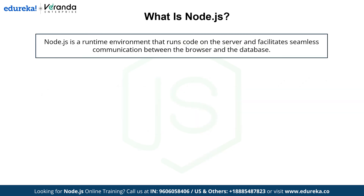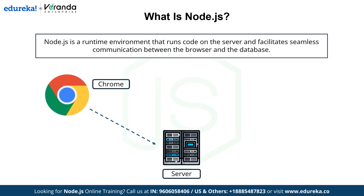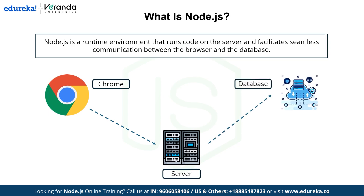Now let's understand what Node.js is. Node.js is a runtime environment that runs code on the server and facilitates seamless communication between the browser and the database. The browser sends requests to the server, the server processes the request using Node.js, then it communicates with the database to fetch or update data before sending the response back to the browser.